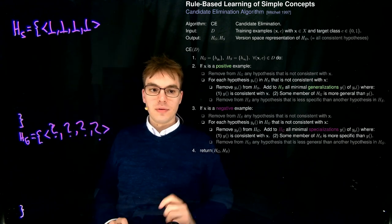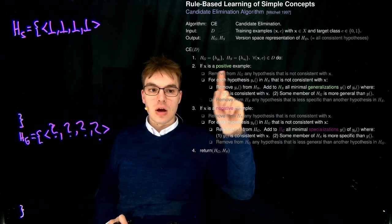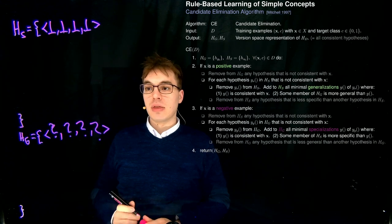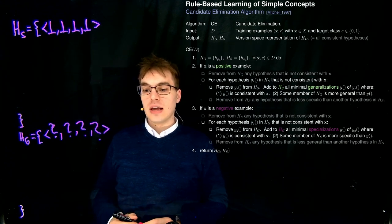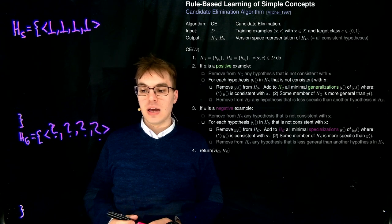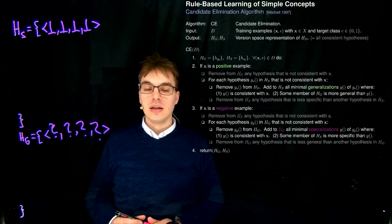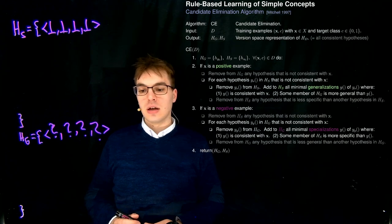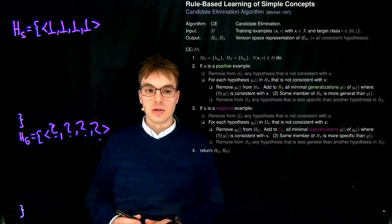The first step for our first example is to check whether it's positive or negative. The first example we consider is: Barbera, bottle aged, acidity mild, color intensity high, award winning — yes. This yields a positive example because it is award winning.